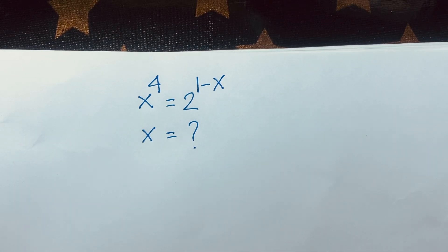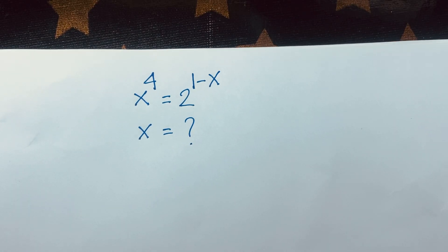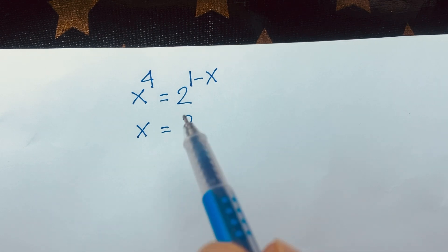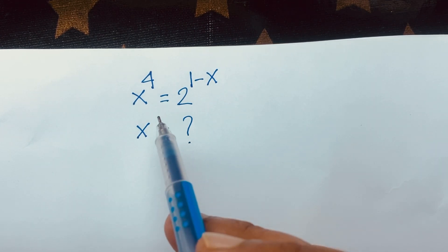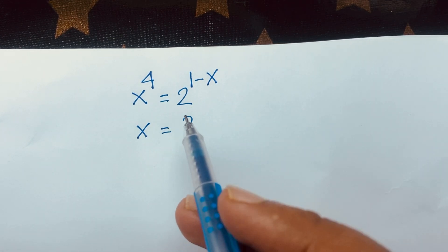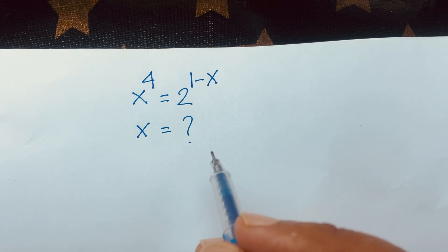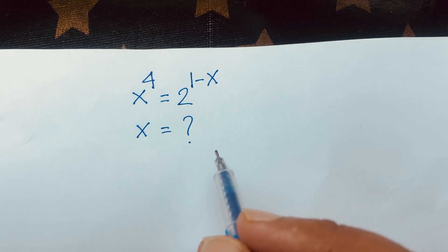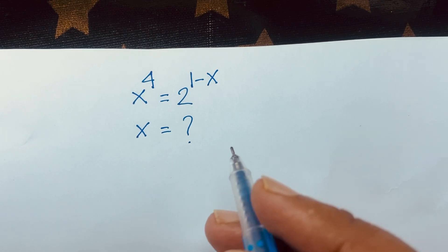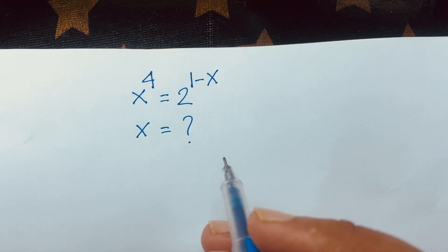Hello everyone, in this video we have solved this interesting math Olympiad question. It is an exponential equation: x to the power 4 is equal to 2 to the power 1 minus x. We will find out what is the value of x in this math Olympiad question.